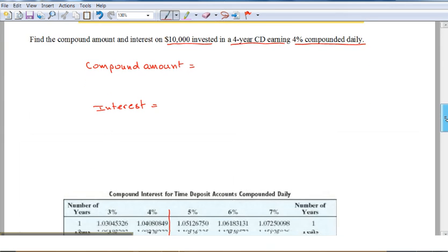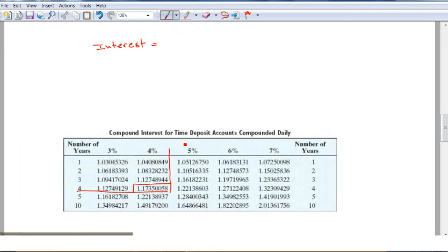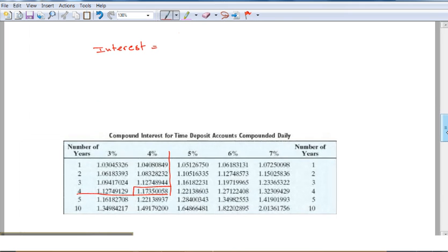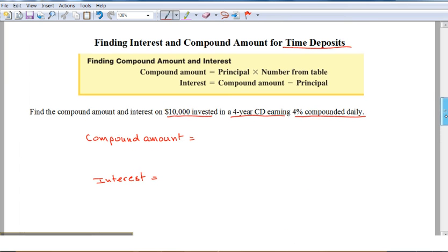Here we must look at the table, compound interest for time deposit accounts compounded daily. The number is four years and the percent is 4%. We look at this number right here.